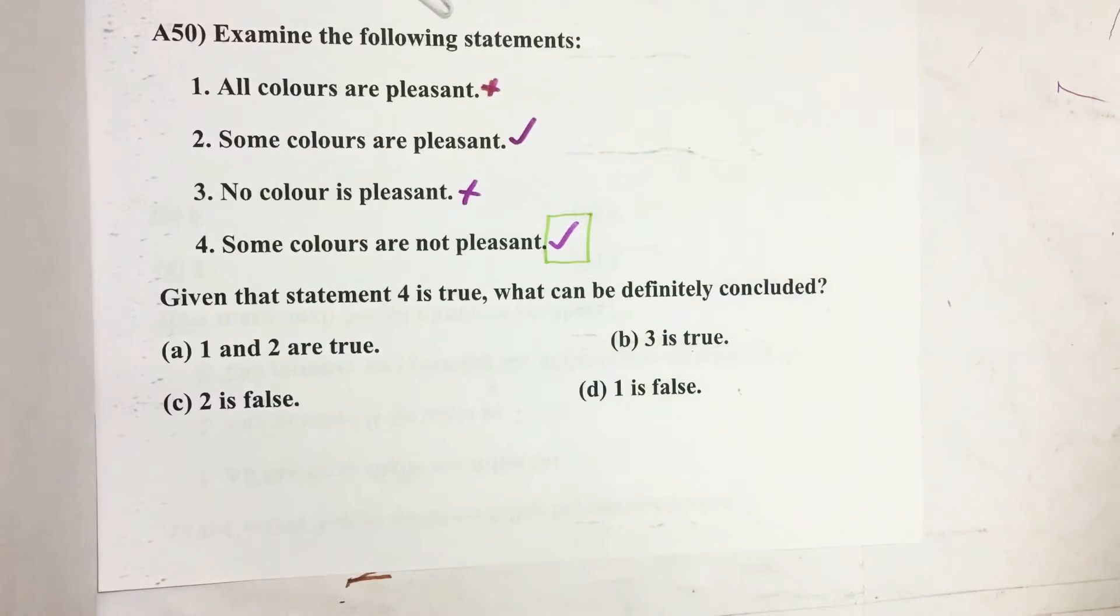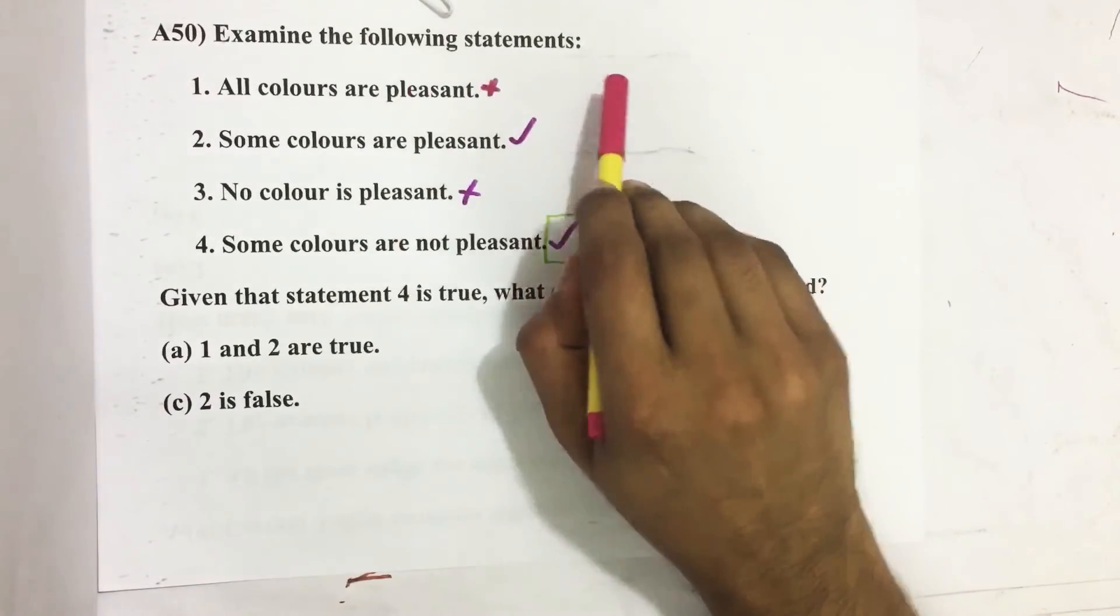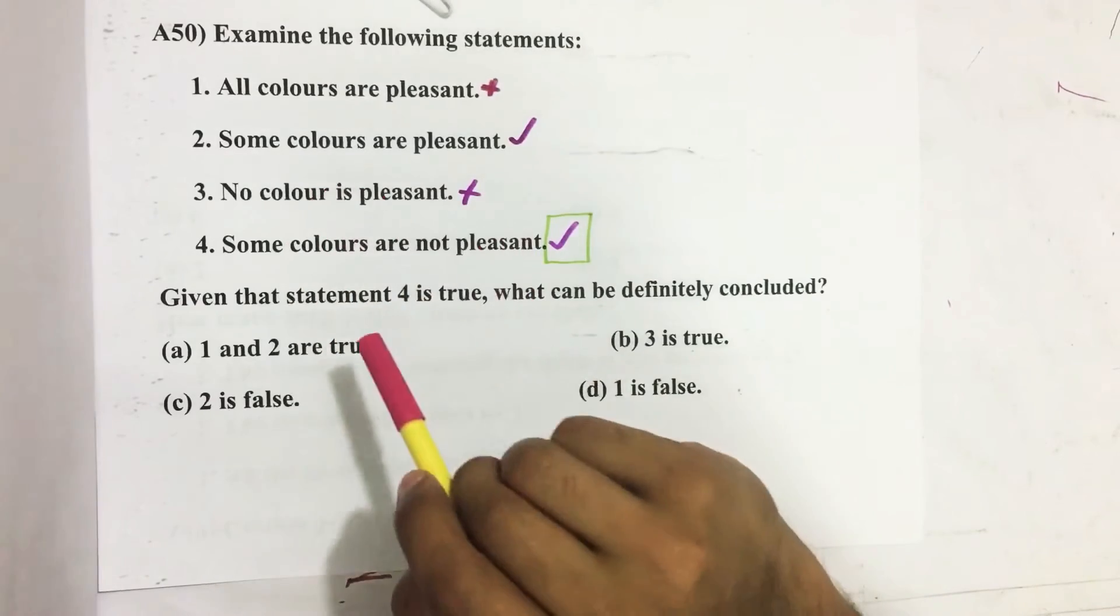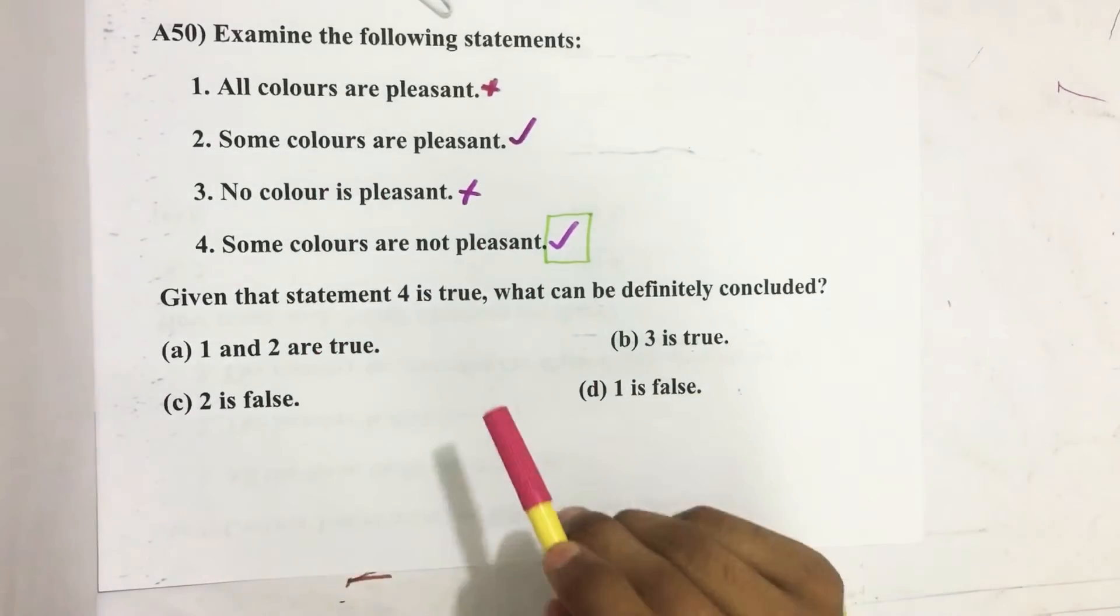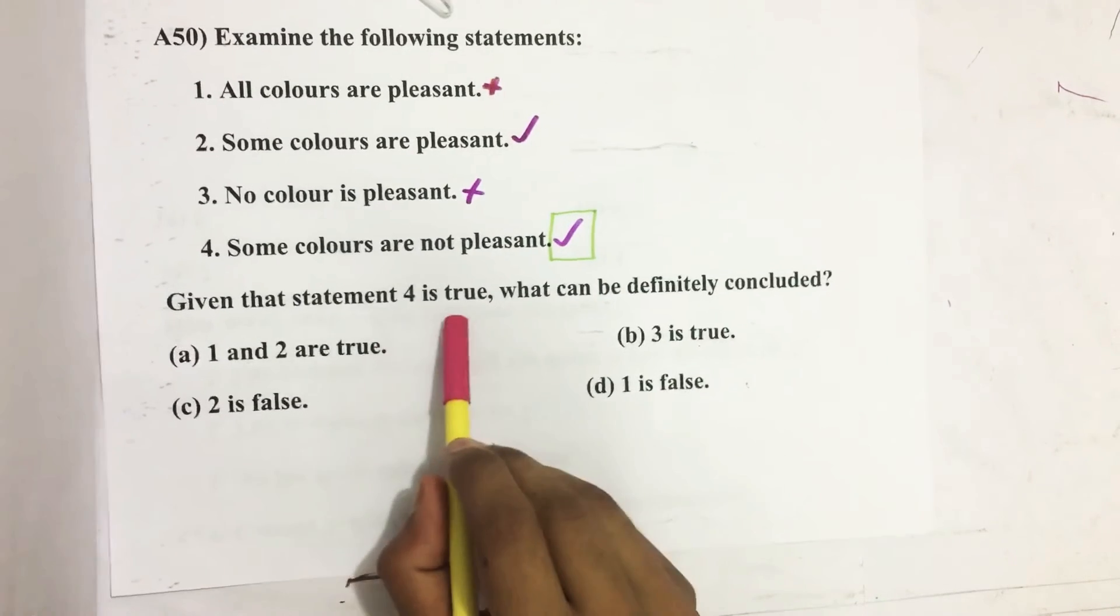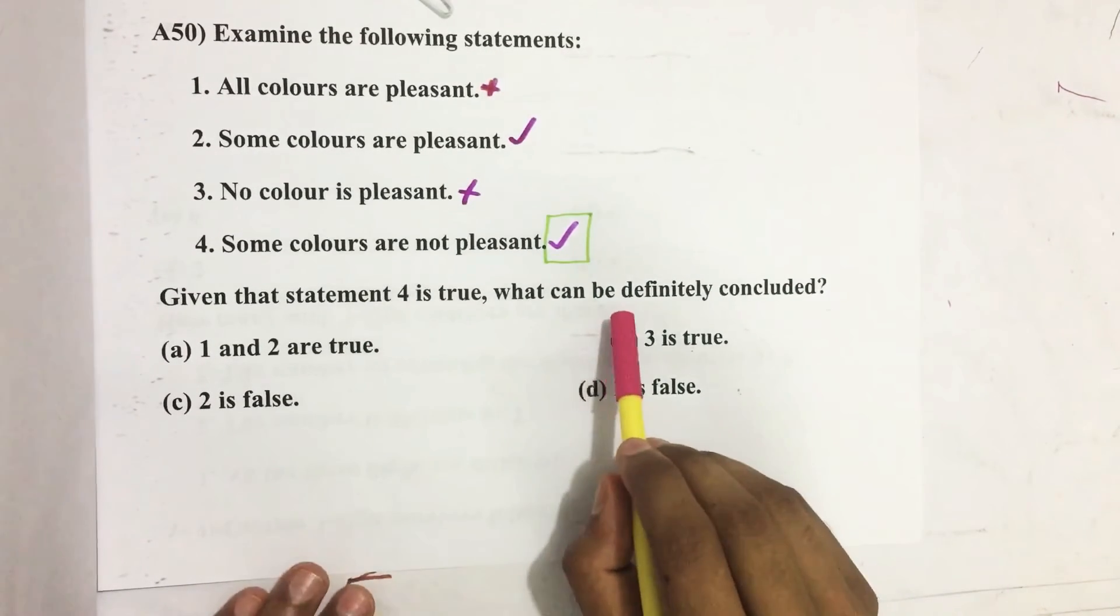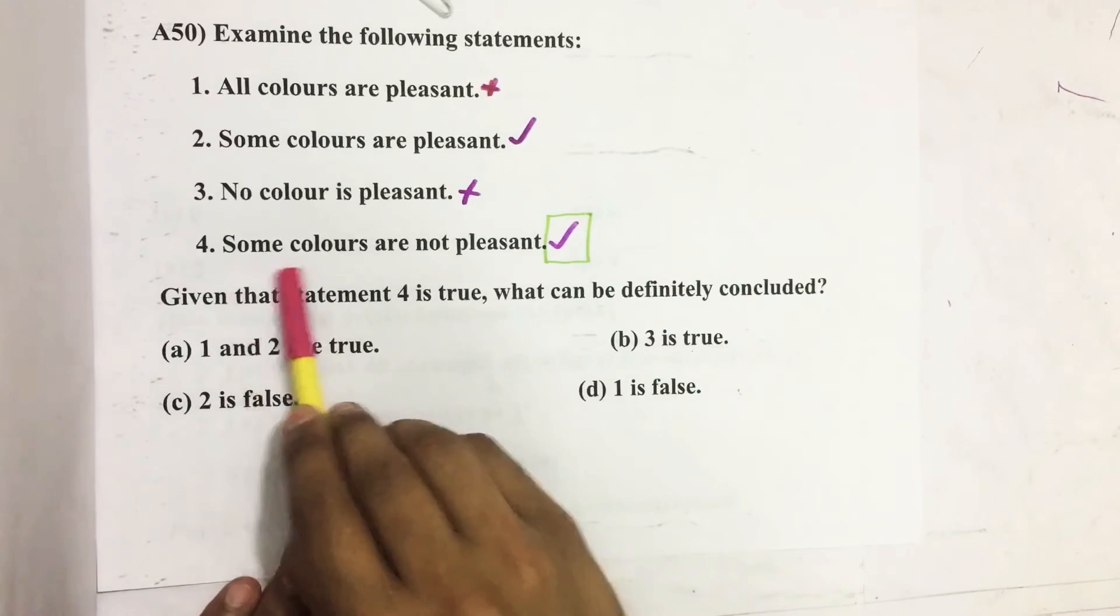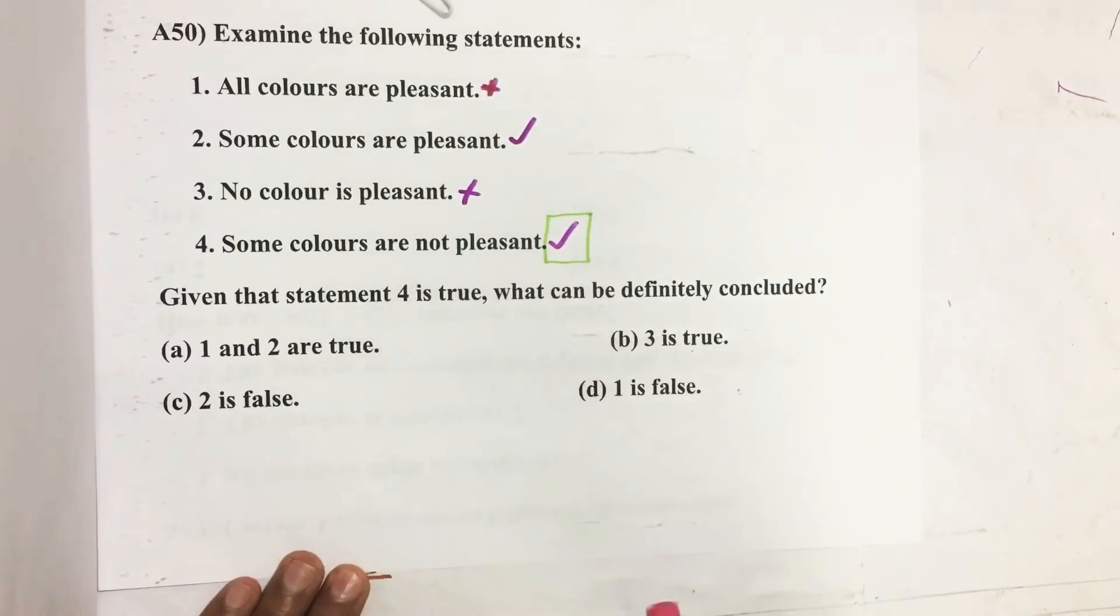Hello everyone, here I am going to solve 2017 CSAT question number 50 from question paper series A. Examine the following statements: 1. All colors are pleasant. 2. Some colors are pleasant. 3. No color is pleasant. 4. Some colors are not pleasant. Given that statement 4 is true, what can be definitely concluded?